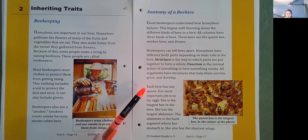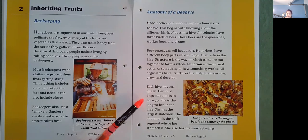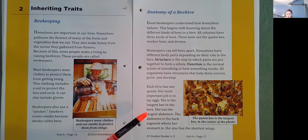Each hive has one queen. Her most important job is to lay eggs. She is the longest bee in the hive. She has the largest abdomen. The abdomen is the back segment where her stomach is. She also has the shortest wings. The queen bee is the largest bee in the center of this photo.